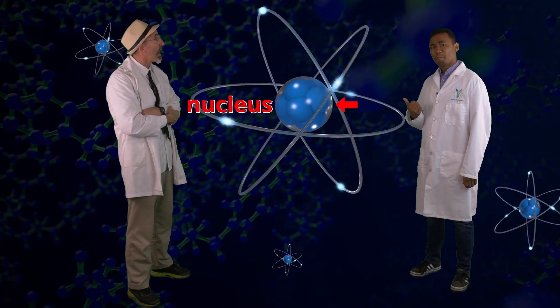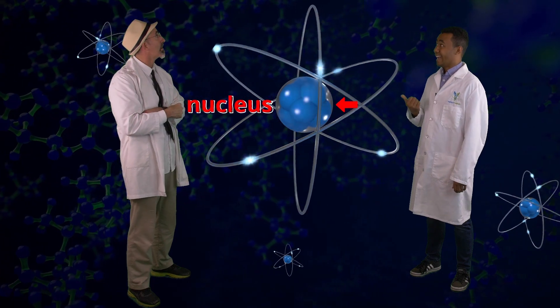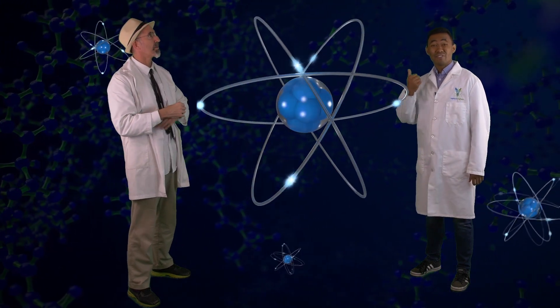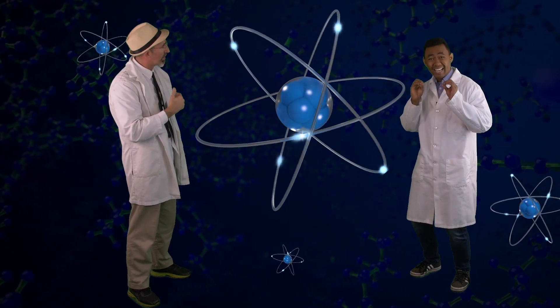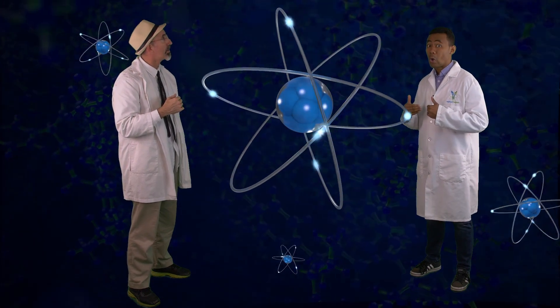And spinning around the nucleus of these atoms are even smaller, tiny, tiny particles that we call electrons.